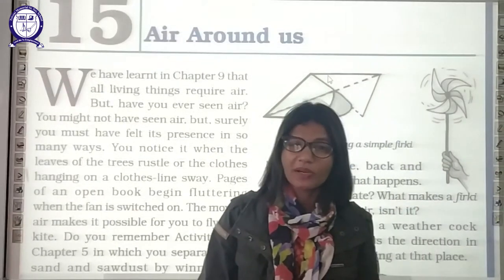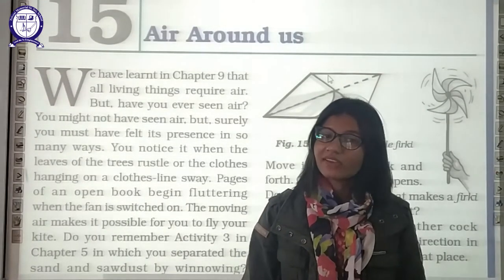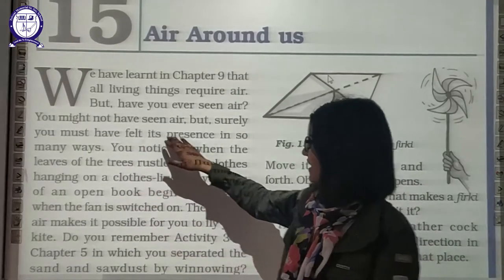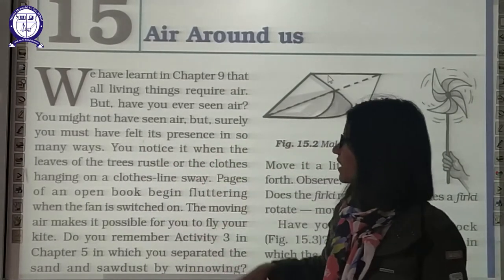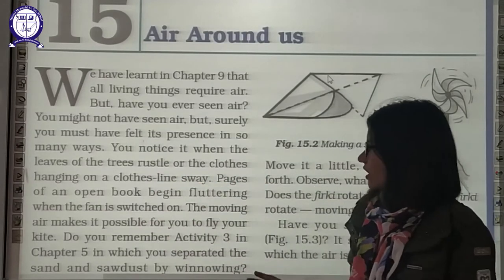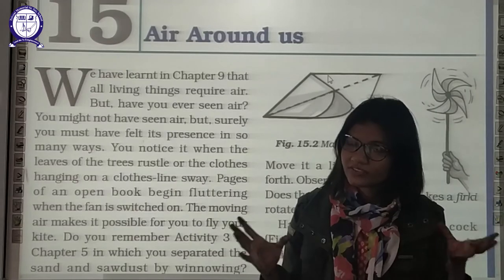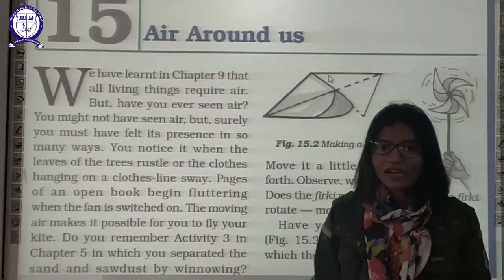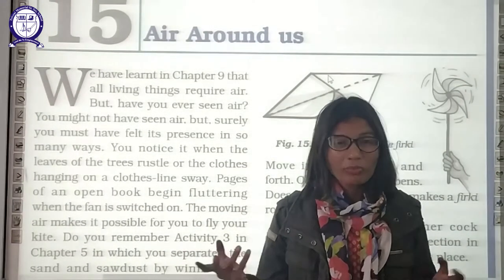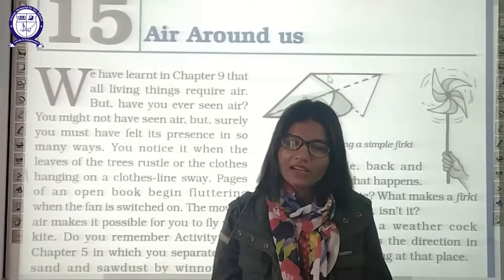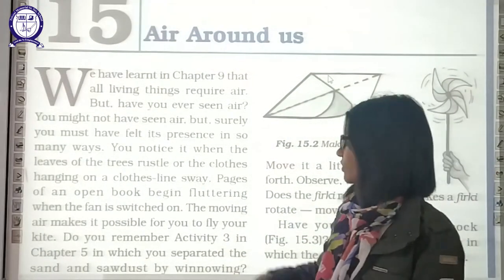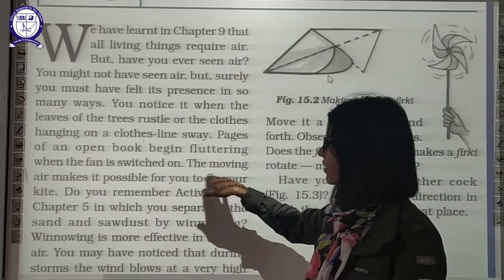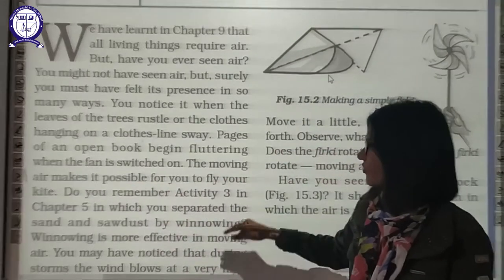The first property of air which we all know is that we can feel the air but we cannot see it. You must have felt it present in so many ways — you notice that it moves the leaves, it rustles clothes, the leaves of trees rustle. Moving pages — how do all these things move? Because of the presence of this air around us. Pages of an open book flutter when a fan is on, and moving air also makes it possible for you to fly a kite.